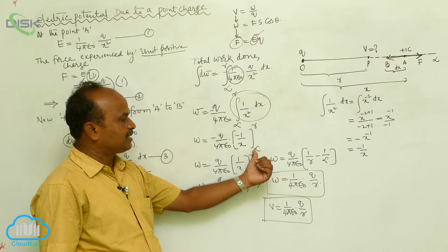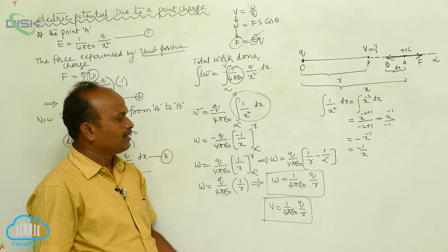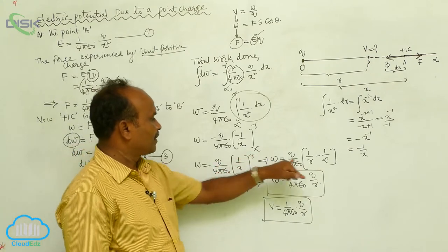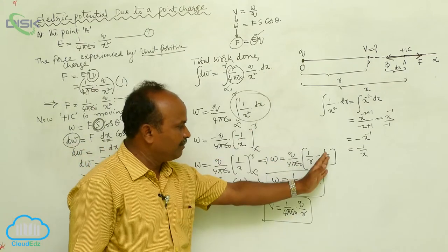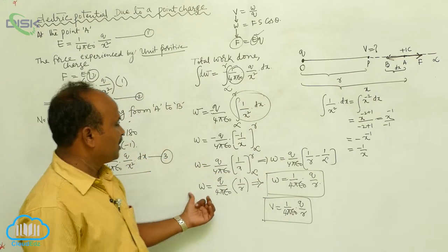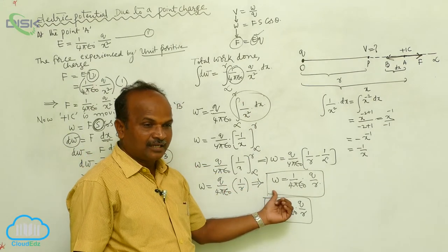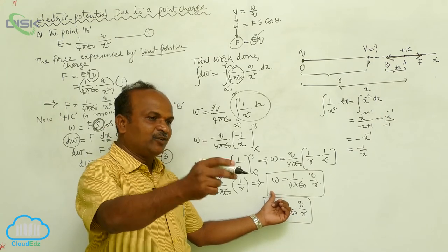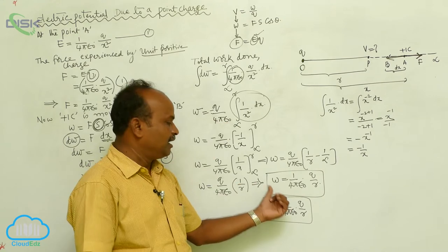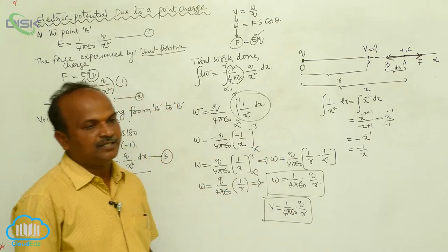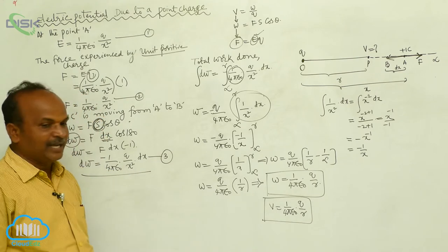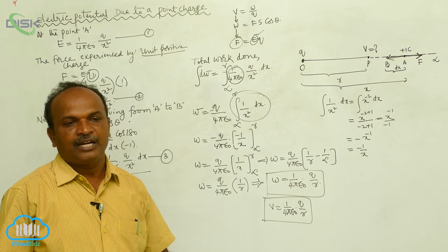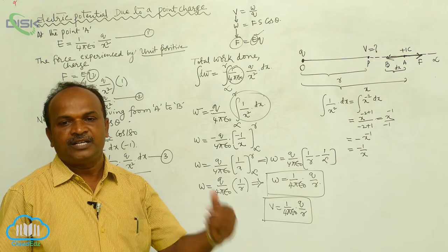The lower limit is infinity and the upper limit is r. Substituting the upper limit first, then the lower limit 1 divided by infinity, the total work done by the unit positive charge moving from infinity to point p is called potential. That potential is V equals 1 divided by 4πε₀ times q divided by r. This is the potential expression due to a point charge at a particular point p, which is at a distance r.